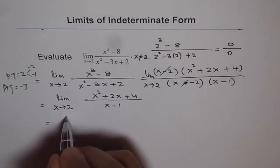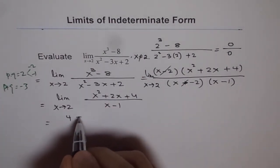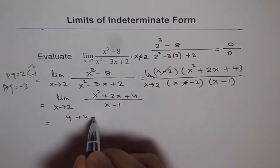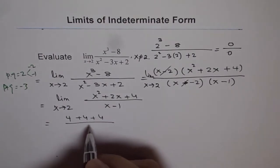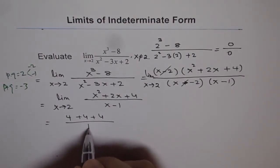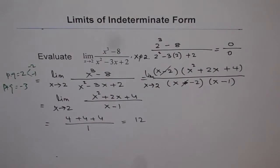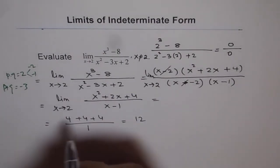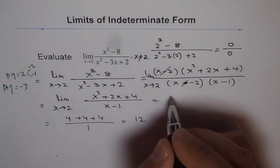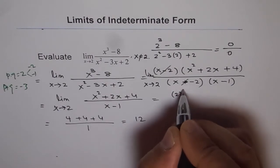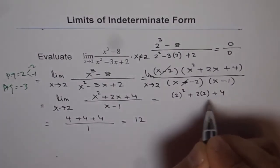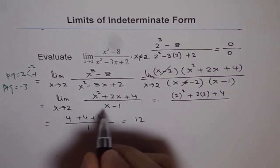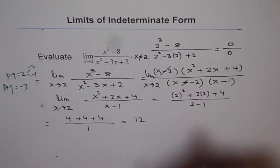So we get 2 squared which is 4, 2 times 2 is 4 plus 4, divided by 2 minus 1. 2 minus 1 is 1. So we get 12 as our answer. So what we did here was we substituted x equals 2. So we get 2 squared plus 2 times 2 plus 4, and in the denominator we substituted 2. We got 2 minus 1.